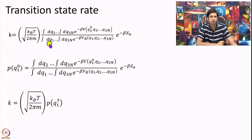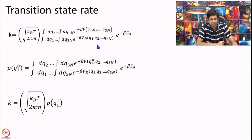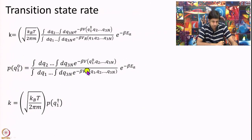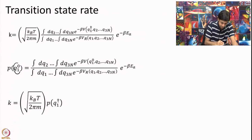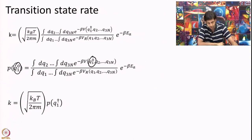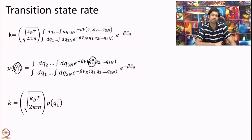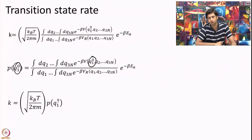Now the fun begins. I define a function p(q1°) where instead of q1‡ I have written q1° — just be careful here, this is not a mistake. I have consciously written this: q1° is some variable that can take any value, not necessarily only the transition state value. Call it x or y if you want — I will call it q1° because that is what I want. The denominator is exactly the same.